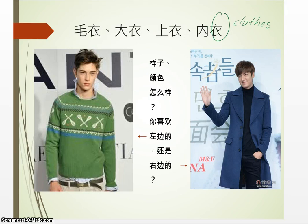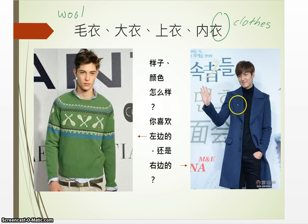下一个词是毛衣。We need to talk about 衣 — 衣 means 衣服 (clothes). You can put a character before it to form the name of other clothing items. For example, wool is 毛, so 毛衣 means sweater. 大衣 — big coat. 上衣 means anything you wear on the upper body, for example, jacket, coat, sweater, shirt — can all be called 上衣。